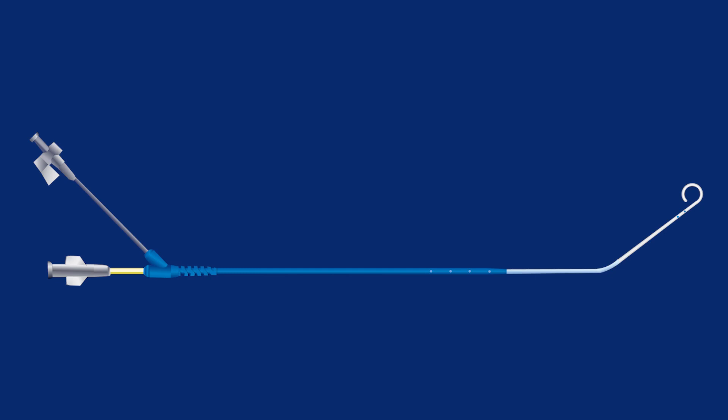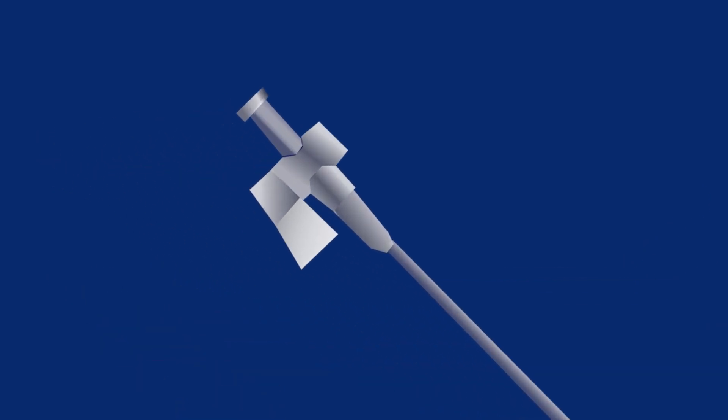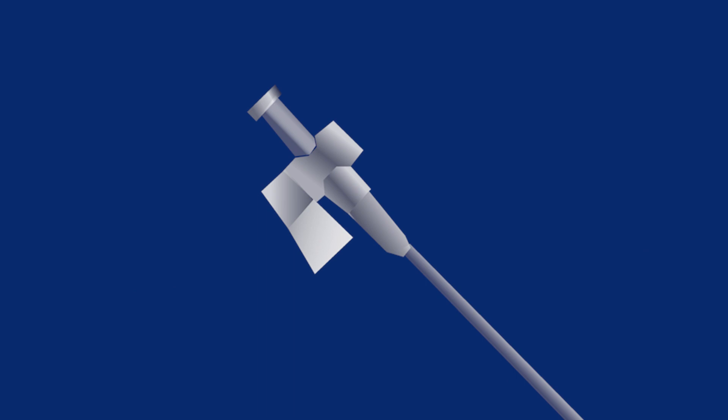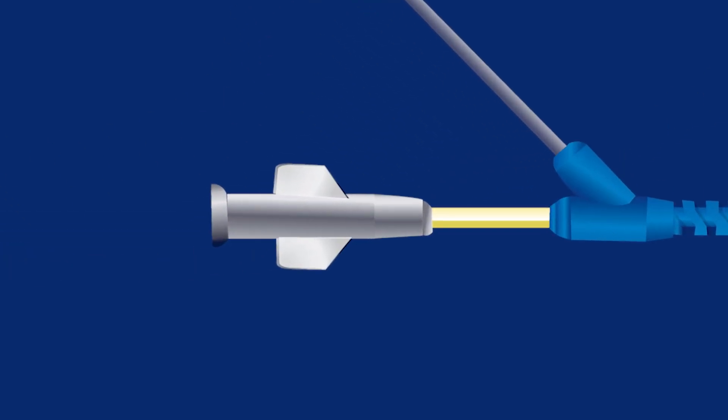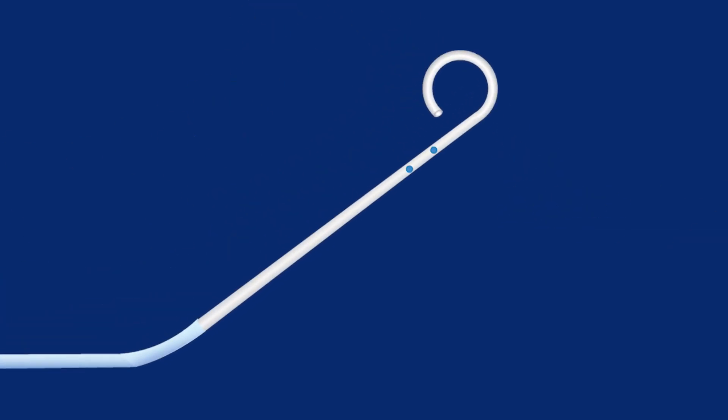The catheter's 2-in-1 coaxial lumen design allows for connections to separate pressure transducers, providing simultaneous pressure measurement and calculation of the pressure gradient. The outer lumen measures aortic pressure via medial side holes, while the inner lumen measures left ventricle pressures via the pigtail, which can also be used for contrast injection.